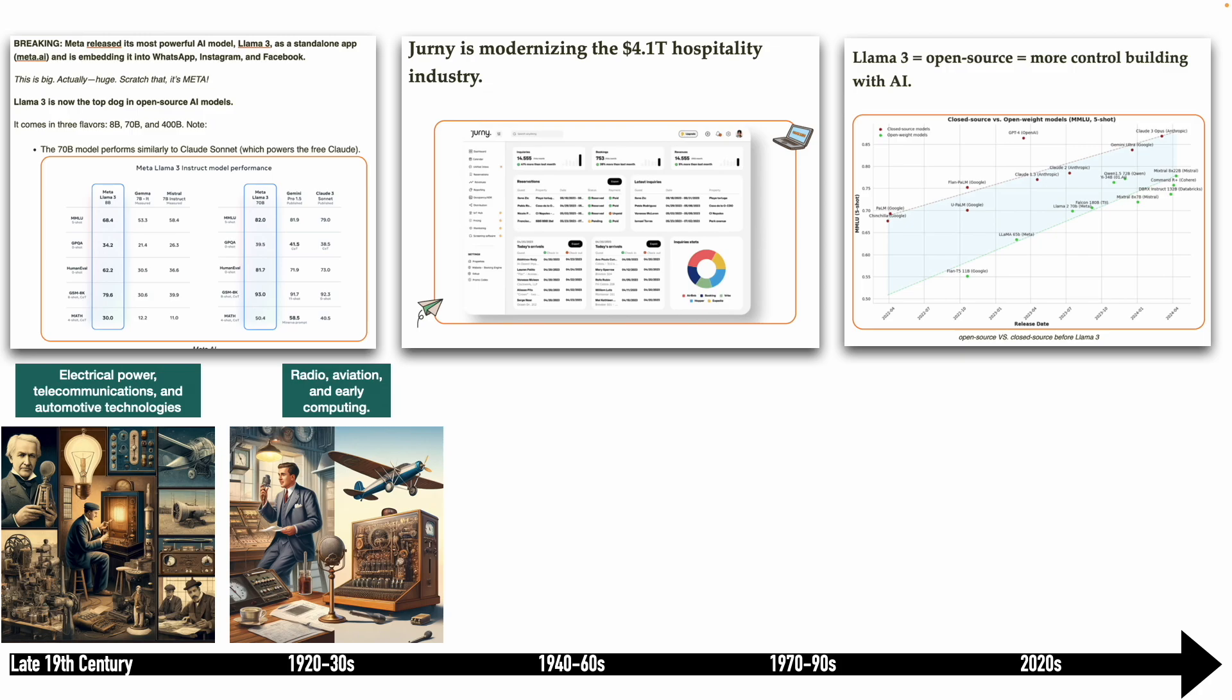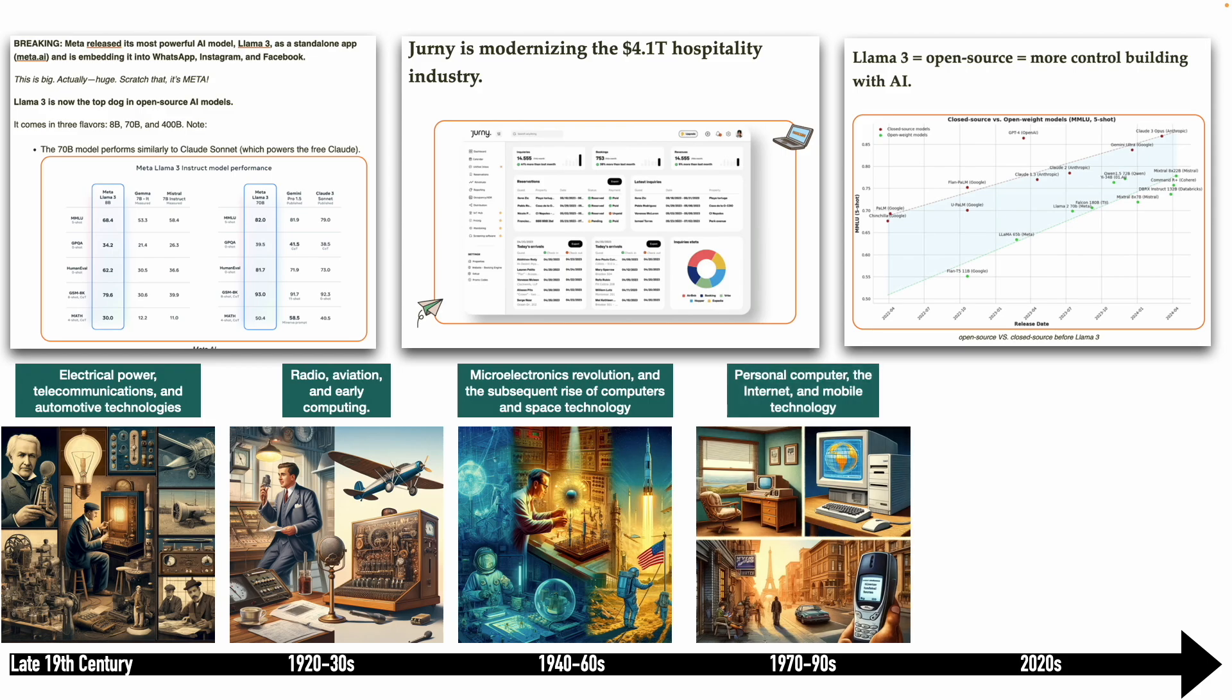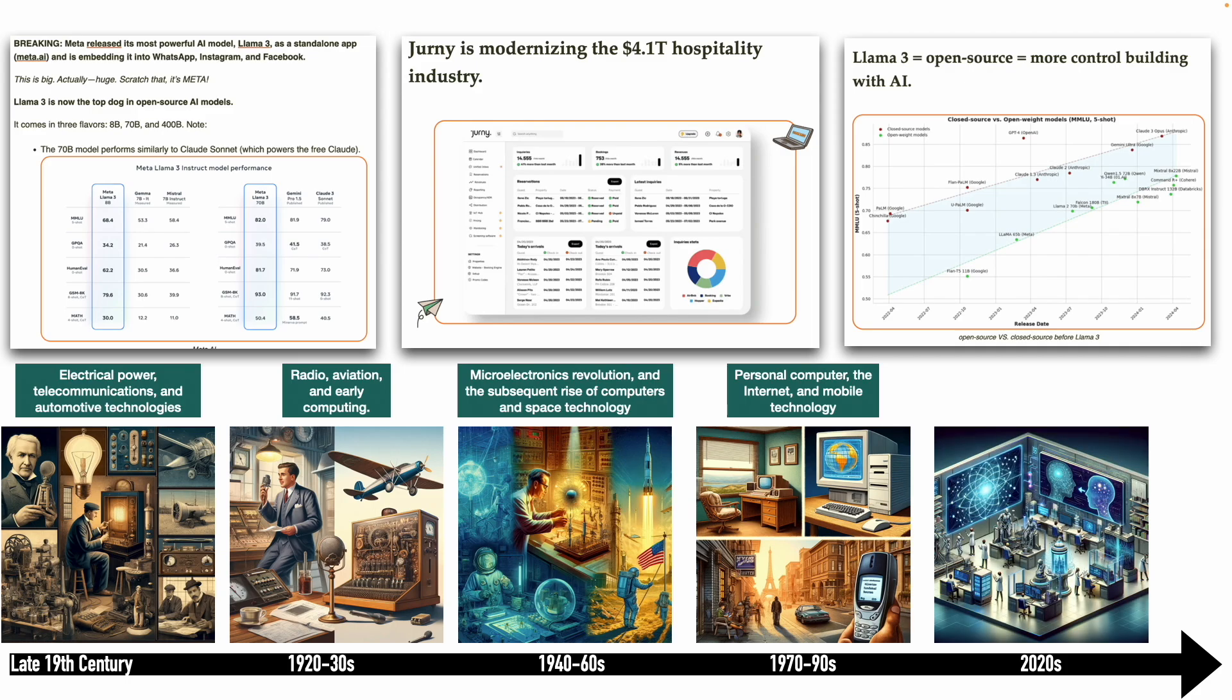Then came the 40s to 60s, which is World War and post-World War era, where the microelectronics revolution happened and subsequent rise of computers and space technology happened where humans reached the moon. The 70s and 90s was the era of personal computers, internet, and mobile technology. The 2020s has been about artificial intelligence.